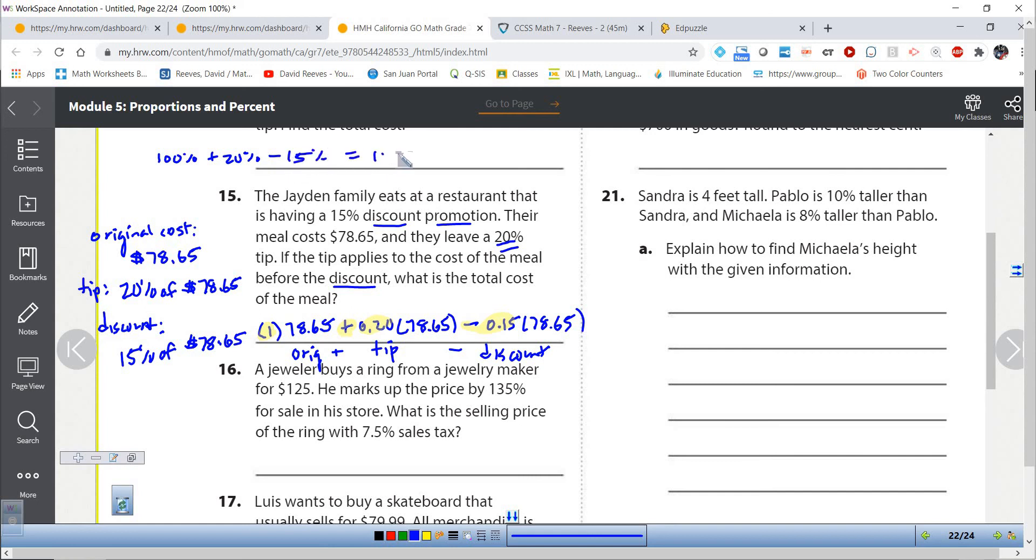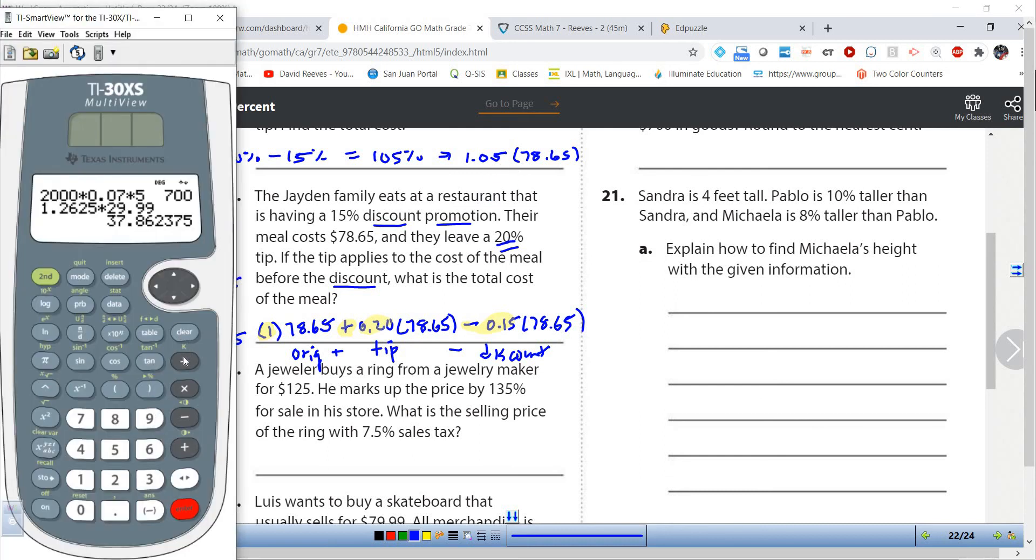This is original plus the tip minus the discount. And we could do it that way. But remember, the original is always 100%. So if we put that together, we have 100% plus 20% minus 15%. And what do you get? You get 105%, which is 1.05. So we could save ourselves a lot of trouble by simply doing 105%.